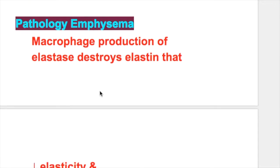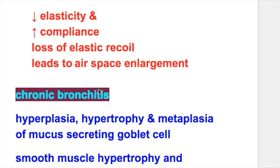Pathology of emphysema and bronchitis. In emphysema, macrophage production of elastase destroys elastin, which decreases elasticity and increases compliance. Loss of elastic recoil leads to air space enlargement.